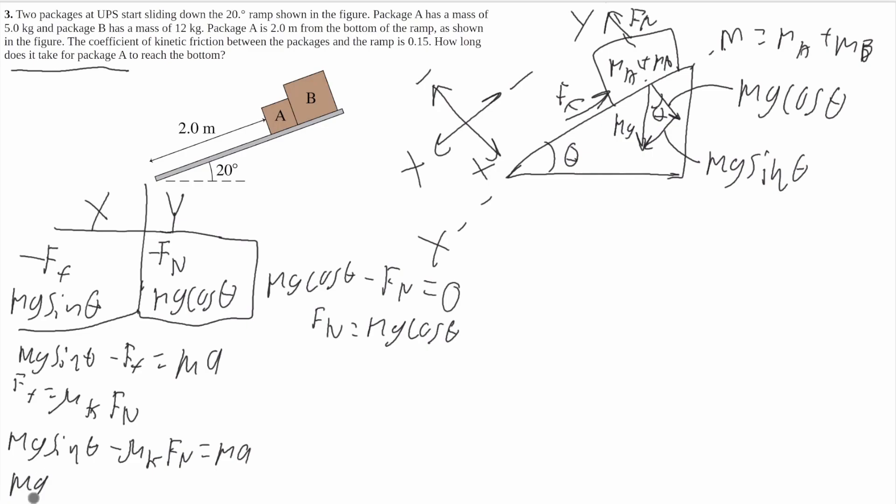So I can plug that in there. I'll get MG sine of theta minus mu kinetic, and it'll be that whole long thing for normal force. It'll be MG cosine of theta. It's going to be equal to MA. Now if you notice here, all of these terms have mass. So they actually can divide and cancel out. Which is why I decided not to draw MA plus MB for all of them. Because it ends up canceling out and making it all much simpler. So I'll get G sine of theta minus mu kinetic G cosine of theta is equal to the acceleration.